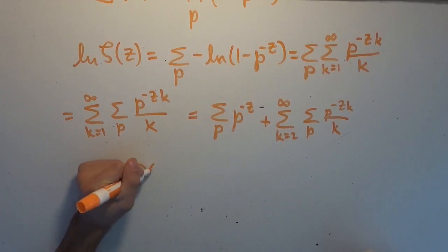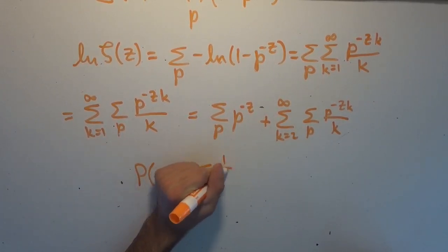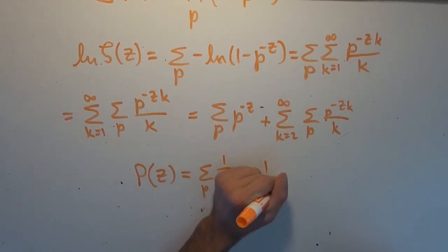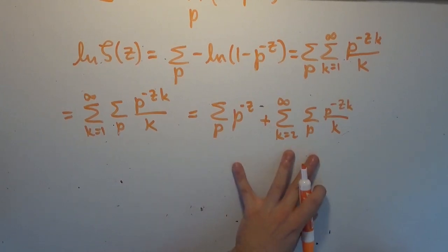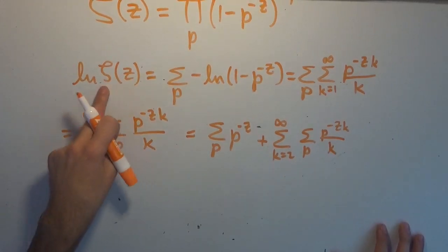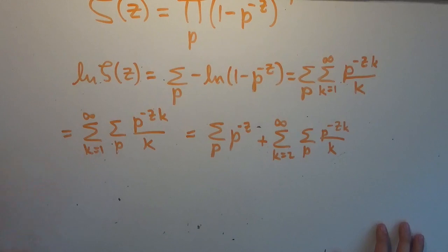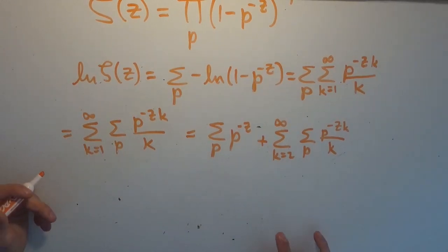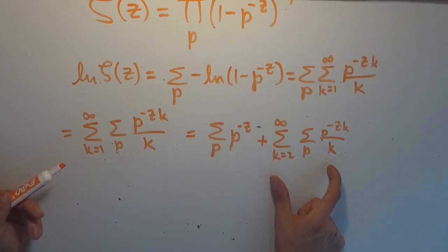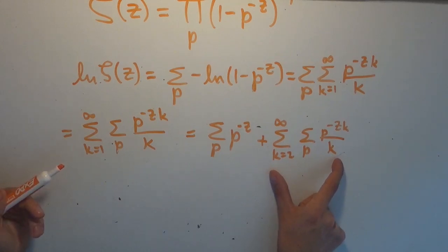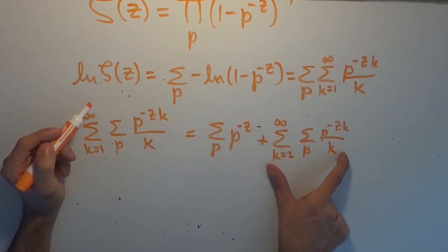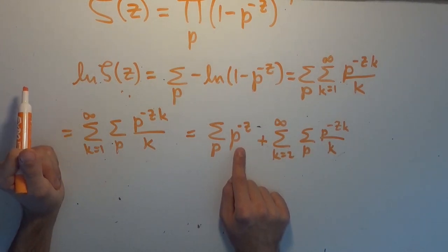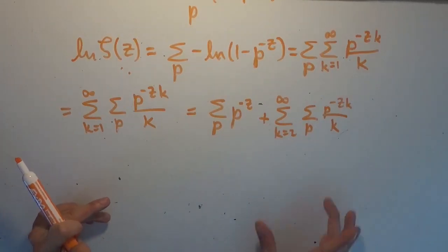The prime zeta function is essentially the same as the zeta function. We can define it as the sum over the primes of 1 over p to the z — this is just 1 over 2 to the z plus 1 over 3 to the z plus et cetera over all the prime numbers. We will be looking at it more in the next video. Essentially the gist of the rest of the proof is: since zeta diverges at z equals 1, the natural logarithm of zeta will have to diverge at z equals 1. We're going to prove that this tail sum is always bounded, and therefore contributes a finite quantity as we let z go to 1.